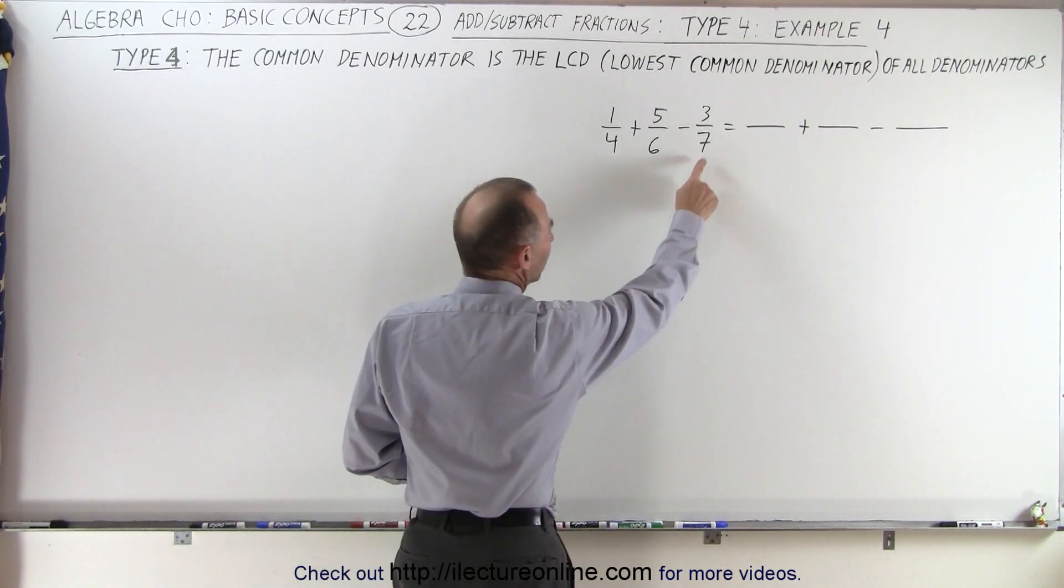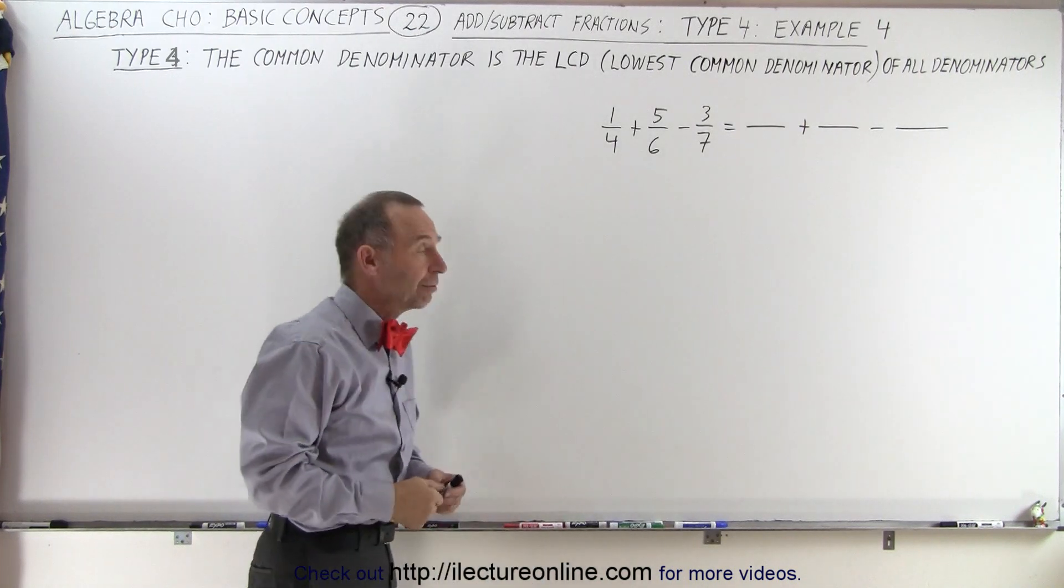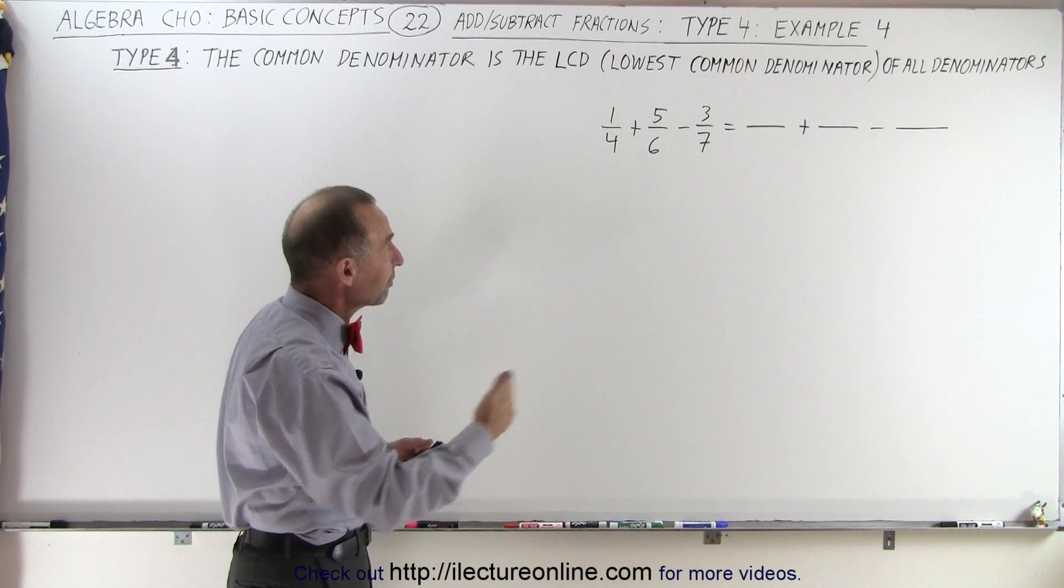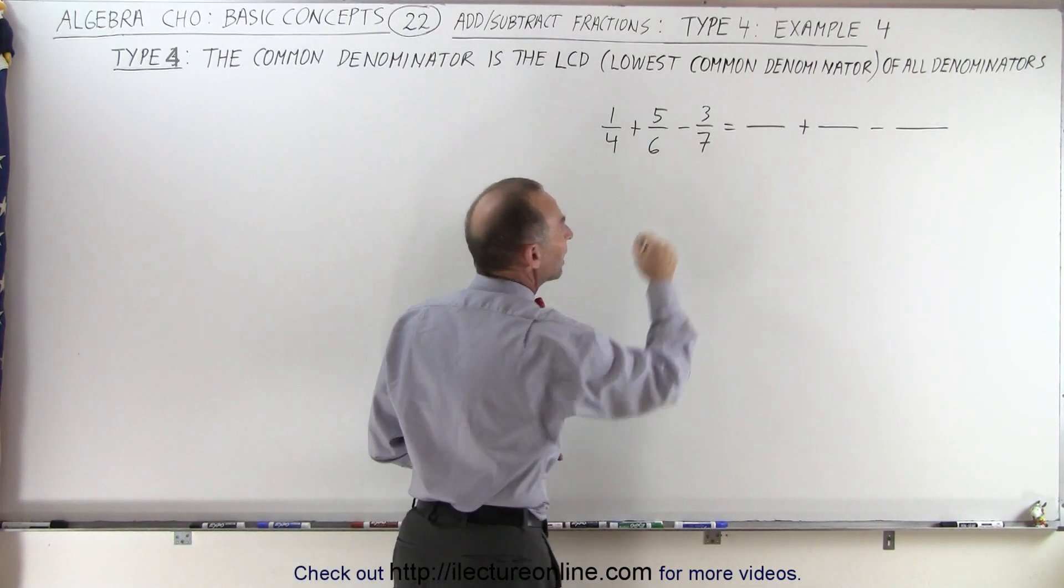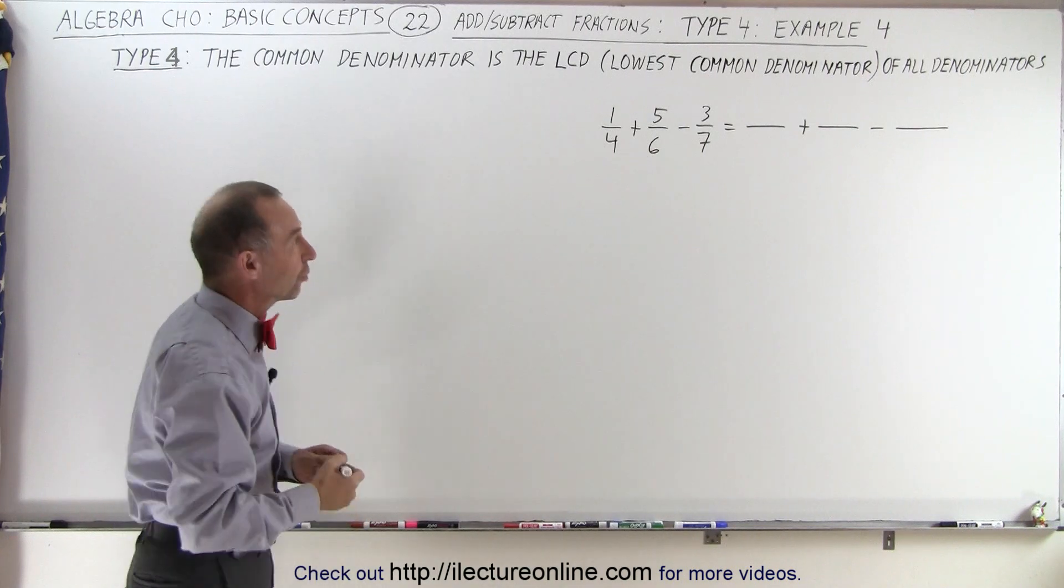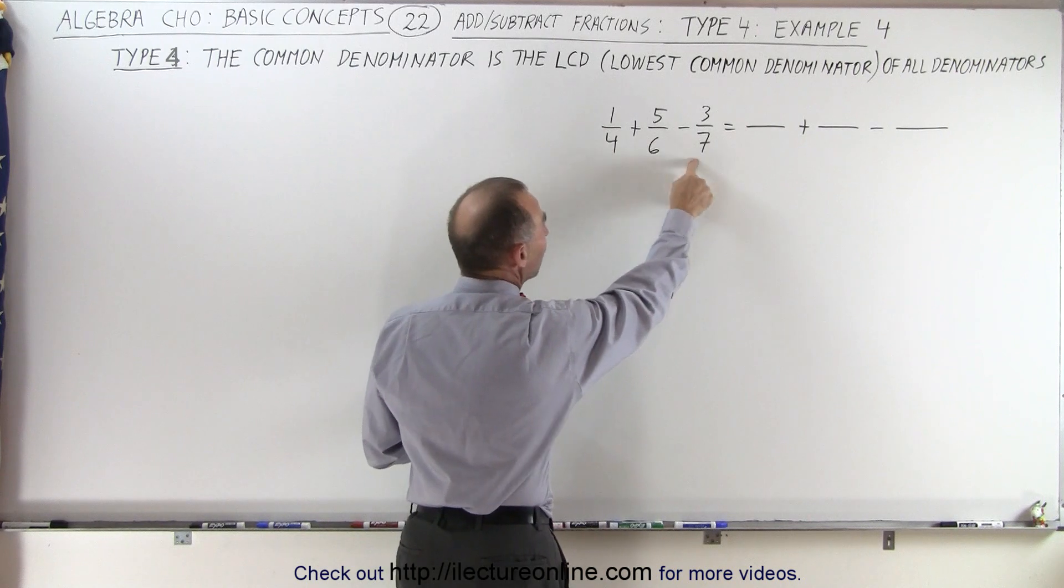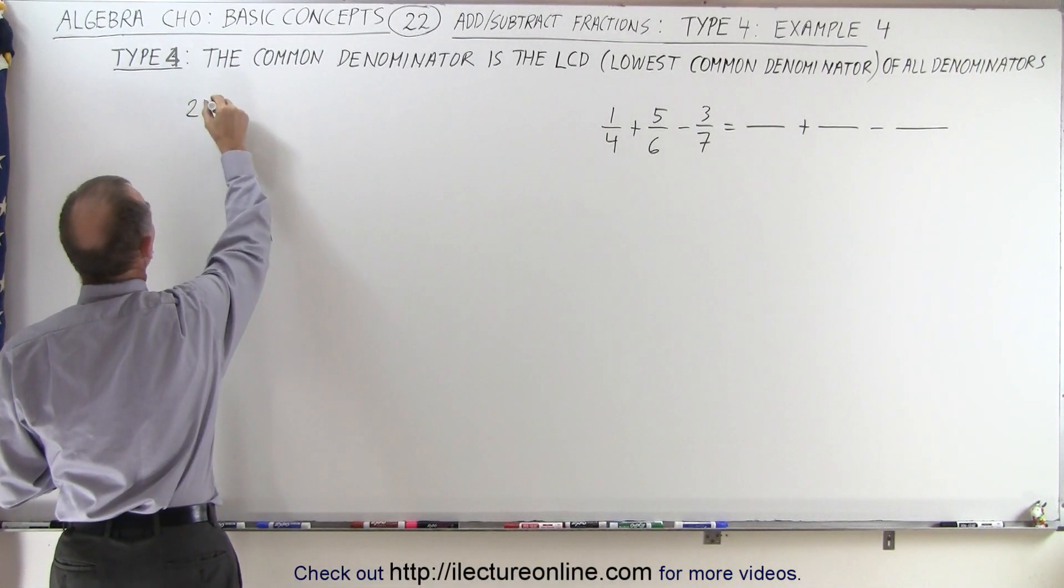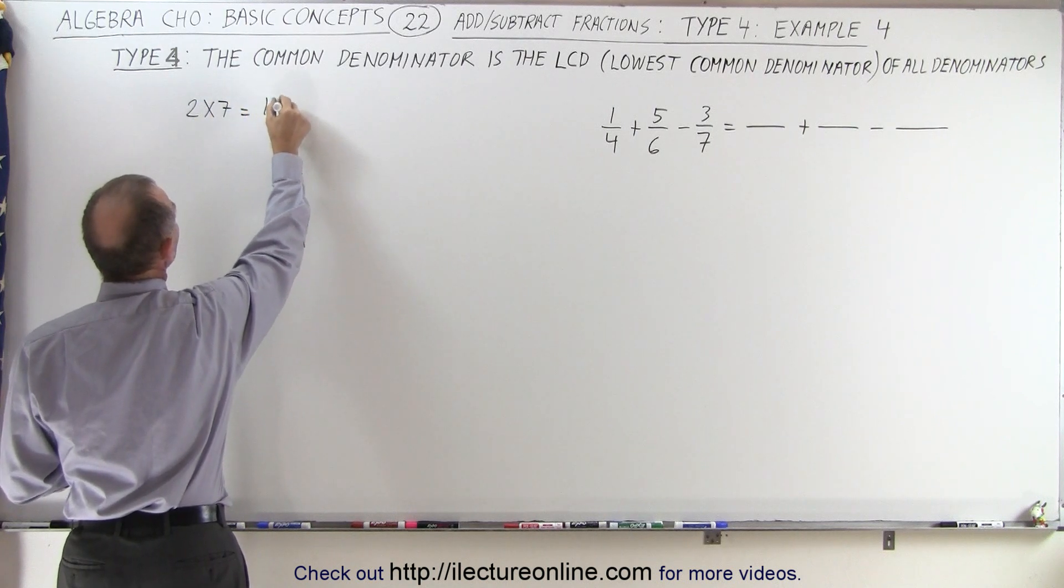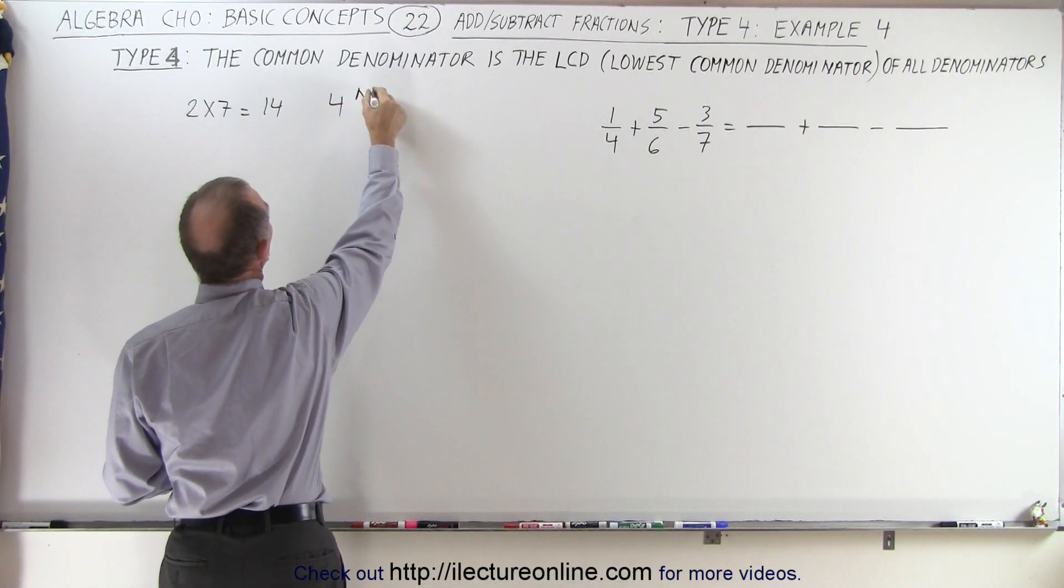The first method is that we'll take our larger of the denominators and find multiples of that: 14, 21, 28, 35, and so forth, to see if the other two denominators fit evenly into the multiple of the largest one. So starting with twice 14, because obviously 4 and 6 do not fit into 7, so we'll start with 2 times 7, which is 14. And the question is, does 4 fit evenly into 14? The answer is no.